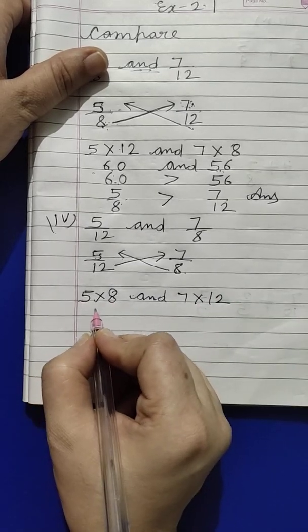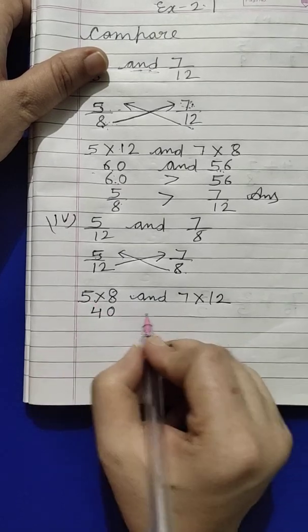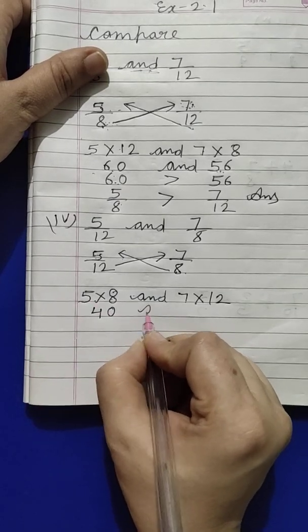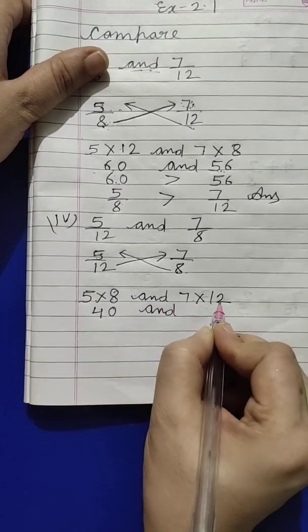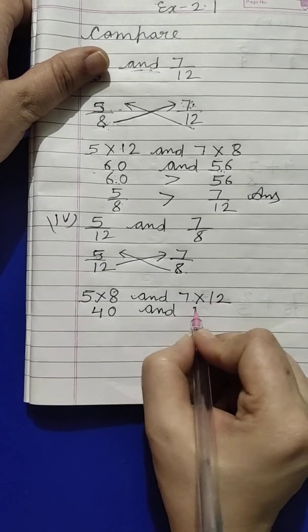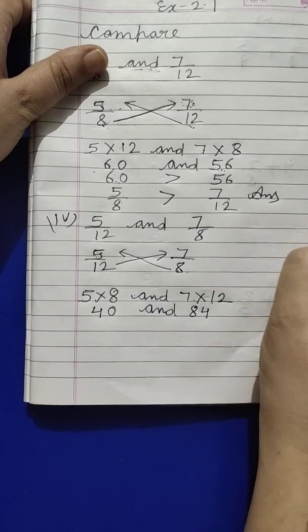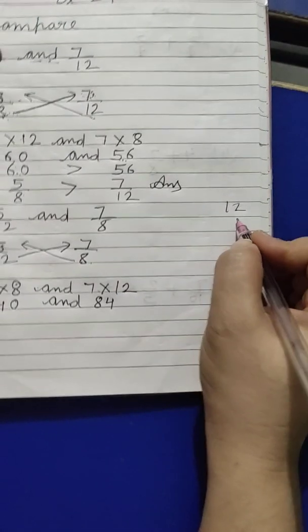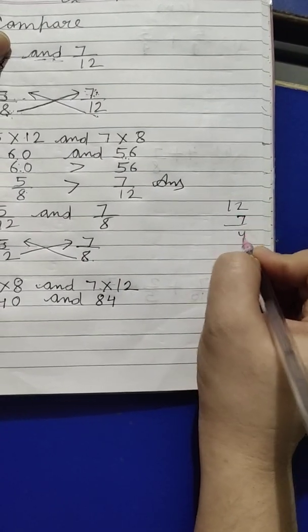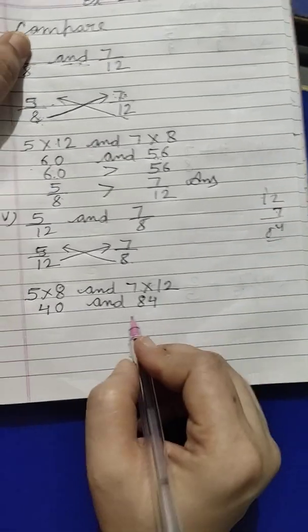5 times 8, 40. Okay? Now, 12 times 7. What happens? Does it come in 12 table? It doesn't come. 84. Some kids know that it doesn't come in 12 table. Do you understand? 84.